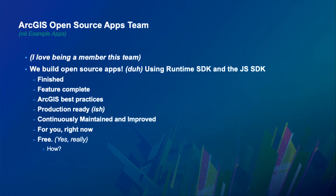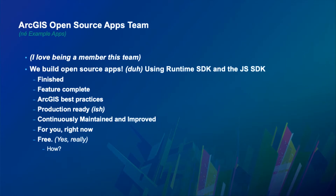These apps are finished. They are feature complete, meaning they combine various SDK features together to tell a full GIS story. We stand by these as ArcGIS best practices. They are production-ready-ish, meaning as you configure them for your organization's deployment, we encourage you to do due diligence in testing, but we stand by the source code. These projects are continuously maintained and improved, and they're for you right now. And they're free — licensed under the Apache 2 license. It will always be free, and it will always be maintained.